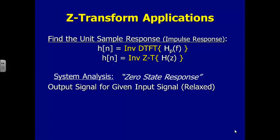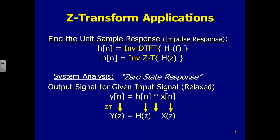For system analysis — finding zero state responses — we can do that with DTFTs, and again with Z-transforms. We have a convolution property in the Z-transform domain similar to Fourier transforms: instead of convolving in the time domain, we can transform and multiply. But again, we need an inverse transform to get a time domain answer, so we'll hold that until Wednesday. Z-transforms also let us find the total response — both zero input and zero state responses — which is part of why we introduced Z-transforms.